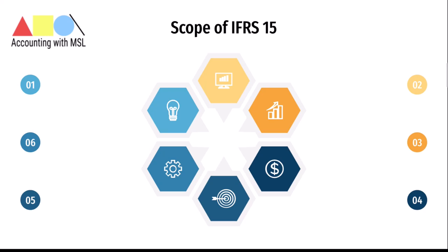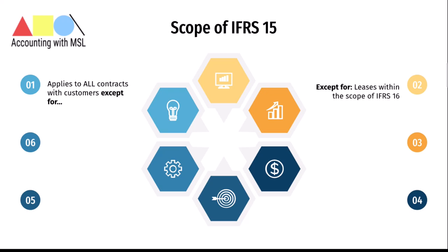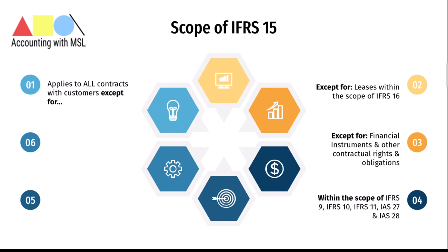Let's talk about the scope of IFRS 15 — what the standard covers and what it does not cover. IFRS 15 applies to all contracts with customers except for a number of exceptions. The first is leases within the scope of IFRS 16 Leases. The next is financial instruments and other obligations within the scope of a number of standards, including IFRS 9 Financial Instruments, IFRS 10 Consolidated Financial Statements, IFRS 11 Joint Arrangements, IAS 27 Separate Financial Statements, and IAS 28 Investment in Associates and Joint Ventures.